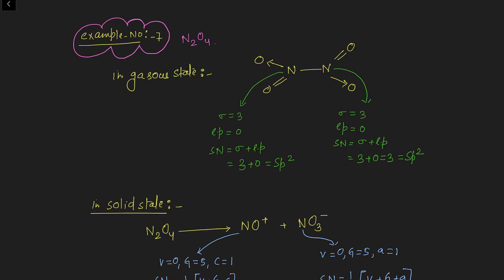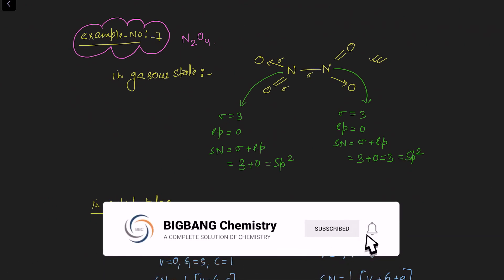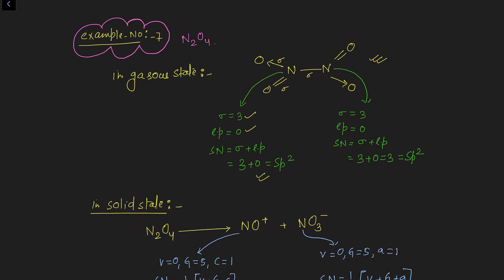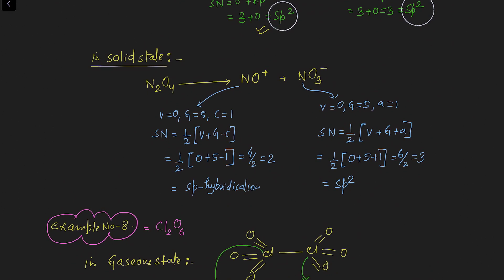Example seven: N2O4 in gaseous state. From the Lewis dot structure, each nitrogen has three sigma bonds and zero lone pairs, giving steric number 3 and sp2 hybridization for each nitrogen. In solid state, N2O4 consists of NO+ (nitrosonium) and NO3− (nitrate) ions. Using the formula for NO+: monovalent atoms = 0, valence electrons of nitrogen = 5, cation charge = 1.